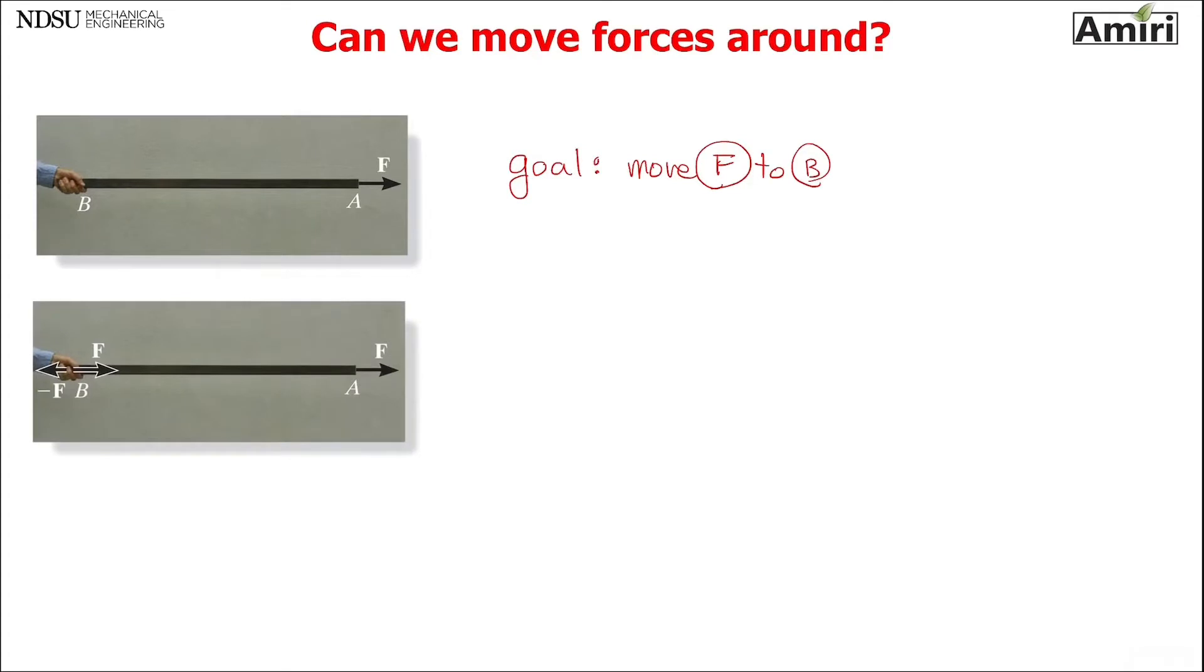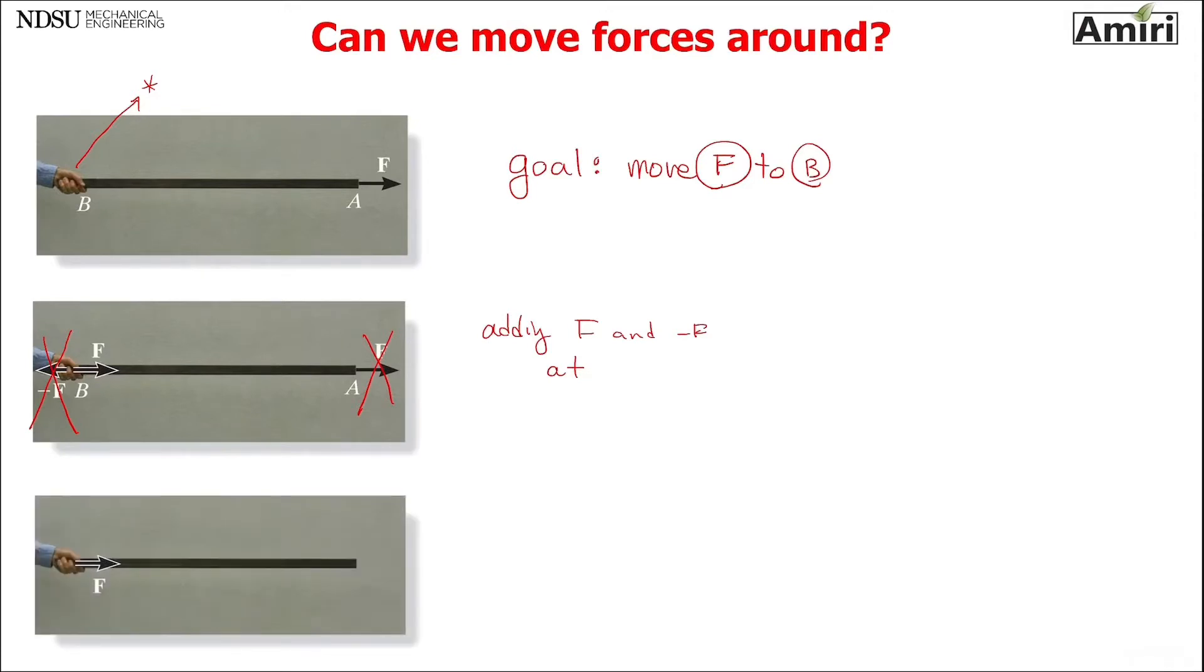So let's add a plus and minus F to point B. Adding F and minus F at B shouldn't affect anything on this beam, right? The person holding the beam at point B shouldn't feel any difference by moving that force there. Now let me use this force to cancel this F. As a result, I can get force F at point B. So F is now moved to point B. Goal achieved. In this case, I was able to just slide force F and bring it to point B.